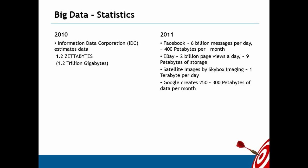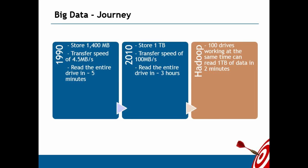These are statistics from trusted websites. Facebook generates six million messages per day and 400 petabytes of data per month. You can imagine one year of data — that's about 4,800 petabytes. Google creates 250 to 300 petabytes of data per month. When you gather ten years of data, this is definitely beyond the capability of a single physical machine. You have to use a distributed architecture with multiple machines in order to share the load instead of overloading a single machine.